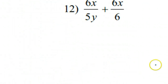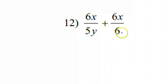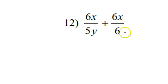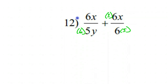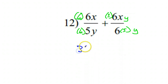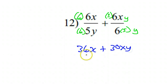Number 12. We've got a lot of 6s and 5s going on. This one needs a 5, so I'm going to give it a 5 in the top and the bottom. And I'll give this one a 6 in the top and the bottom. Now they're both 30. This has a y though, so I'll give it a y in the top and the bottom. What I have now is 36x plus 30xy over 30y. Both of these are 30y.